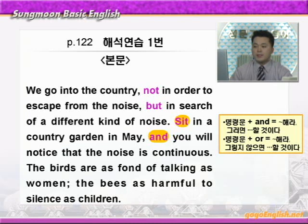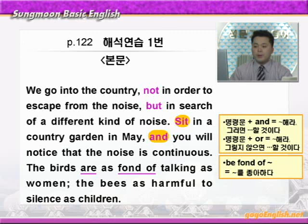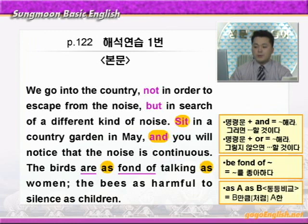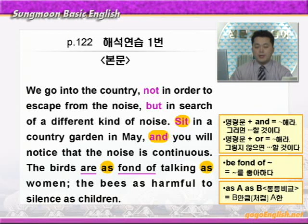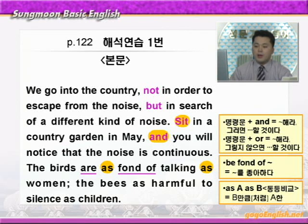'the birds are as fond of talking as women.' be fond of에 밑줄 쳐보면 '뭐뭐를 좋아하다' 이런 뜻이죠. as A as B는 동등 비교를 나타내서 'B만큼 A하다' 또는 'B처럼 A하다' 이런 의미가 됩니다. 새들이 여자들만큼이나 말하는 것을 좋아한다. 'the bees as harmful to silence as children.' bees 다음에 be동사가 생략되어 있습니다. harmful은 해로운, silence는 정적·고요함·침묵, 벌들은 아이들만큼이나 고요함에 해롭다, 다시 말해 고요함에 장애가 된다.